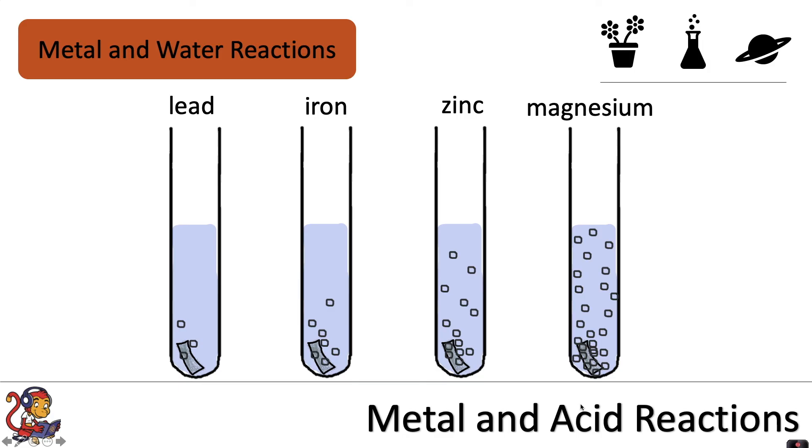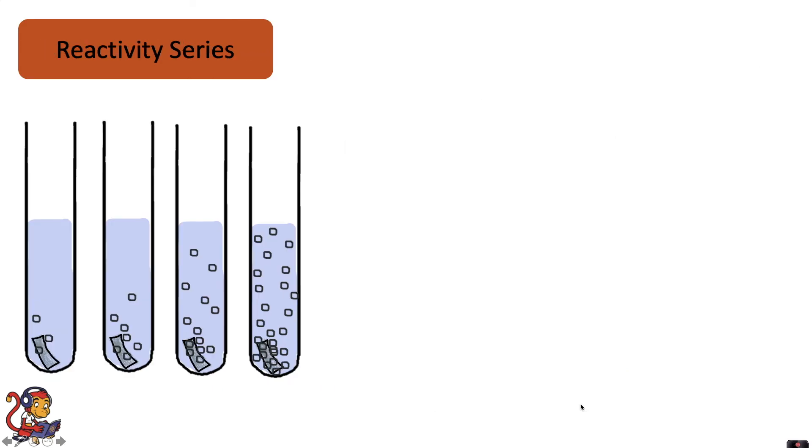And just like when you were reacting metals with acids, you can use these observations to rank your metals in terms of reactivity. So we'd have magnesium, zinc, iron and lead.